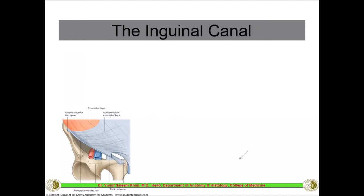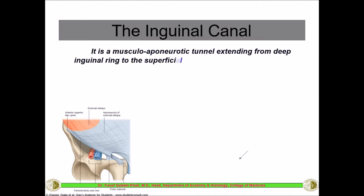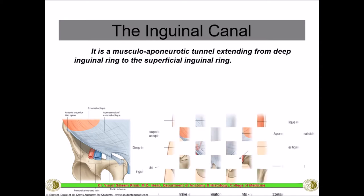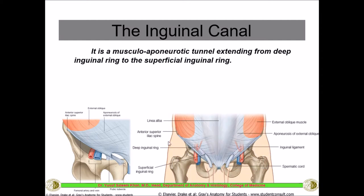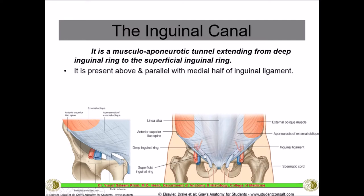The inguinal canal is a very important canal clinically. It is made up of the muscular as well as aponeurotic parts of the external oblique, internal oblique, and transverse abdominal muscle, all together forming a canal just above the medial half of the inguinal ligament. This canal runs from the deep inguinal ring to the superficial inguinal ring and is almost four centimeters in total length.